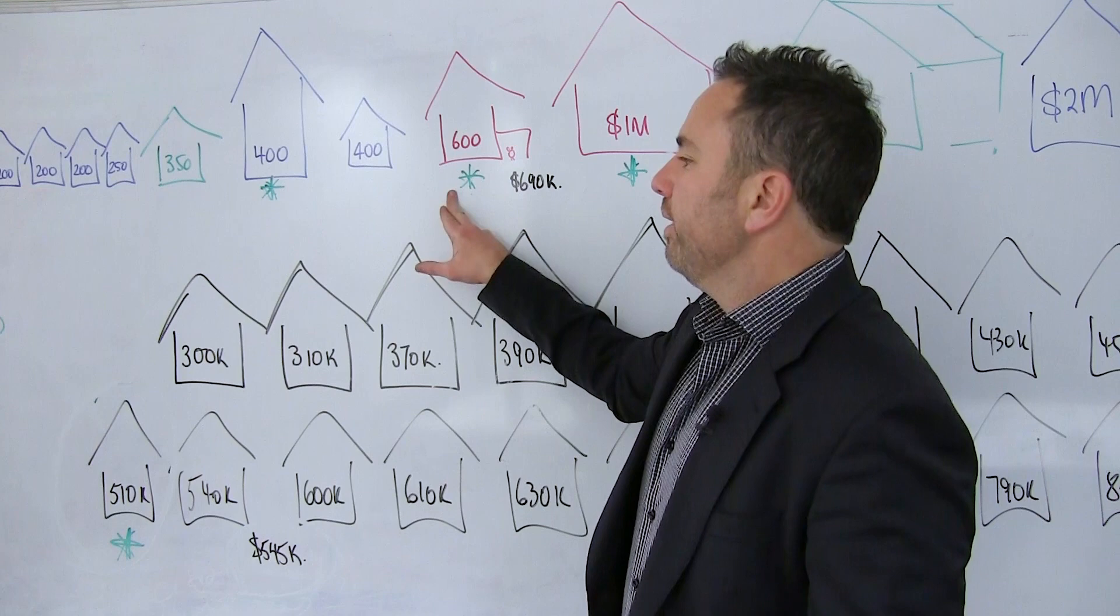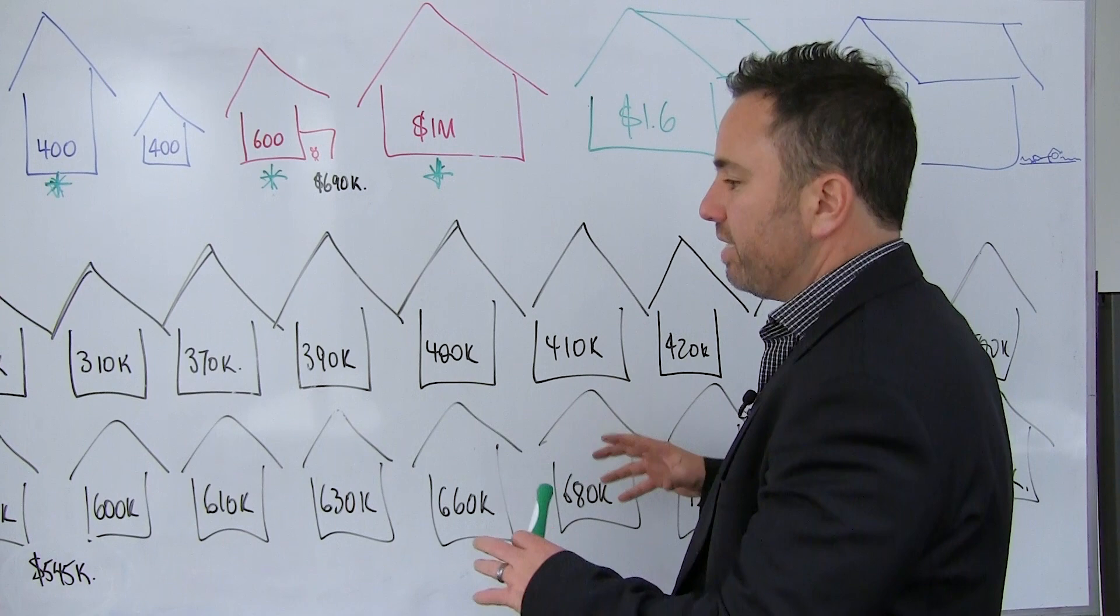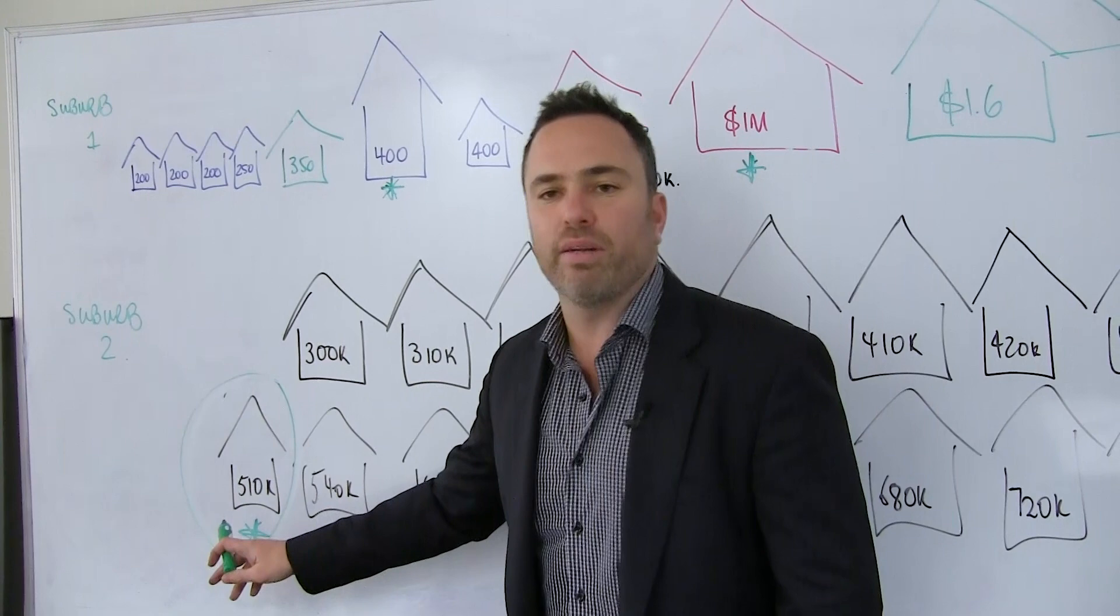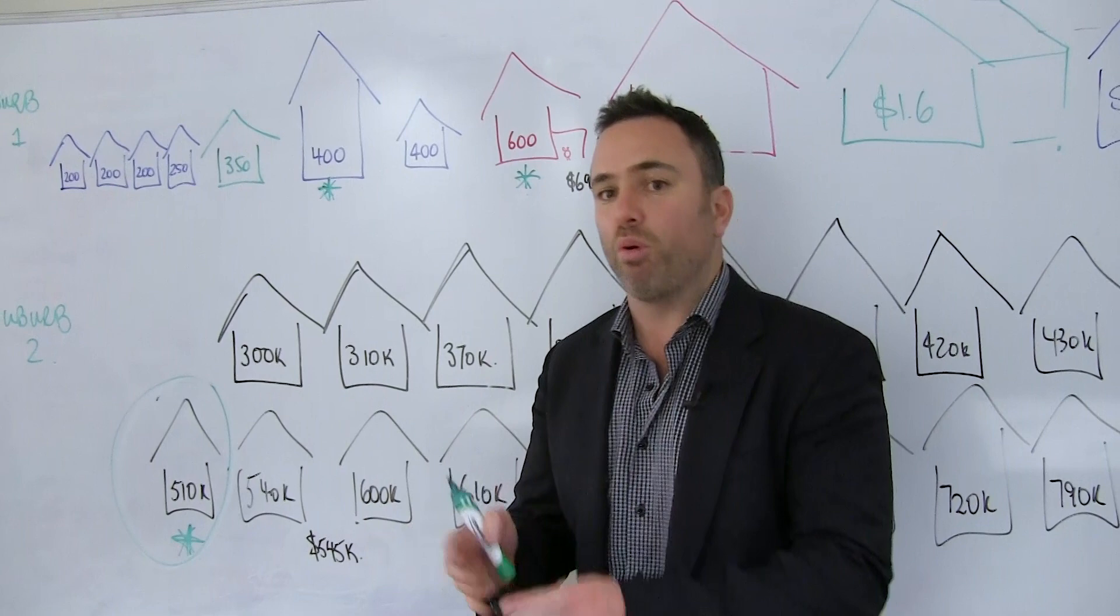Let's have a look at suburb two. And suburb two, dull, dreary, just a whole host of very similar properties being sold and they're all black. And if you have a look at this, yes, there's more of them. The middle point, the median on this particular one was $510,000. And when you look at the bottom end, $300,000, and you look at the top end, $880,000, it really does represent the middle point of those property values.